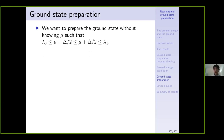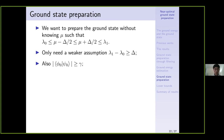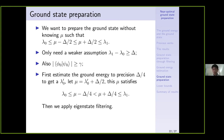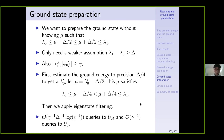Now we use this to do ground state preparation without knowing mu. We only need the weaker assumption that there is a spectral gap delta separating lambda_0 and lambda_1, plus the overlap assumption. We first estimate the ground energy to precision delta/4, obtaining estimate lambda_0', and then find a mu through lambda_0' that satisfies the required inequalities. This enables us to apply eigenstate filtering from the first algorithm to prepare the ground state. The complexity is obtained by replacing epsilon in the previous algorithm with the spectral gap delta, and the dependence on gamma and delta are both optimal.